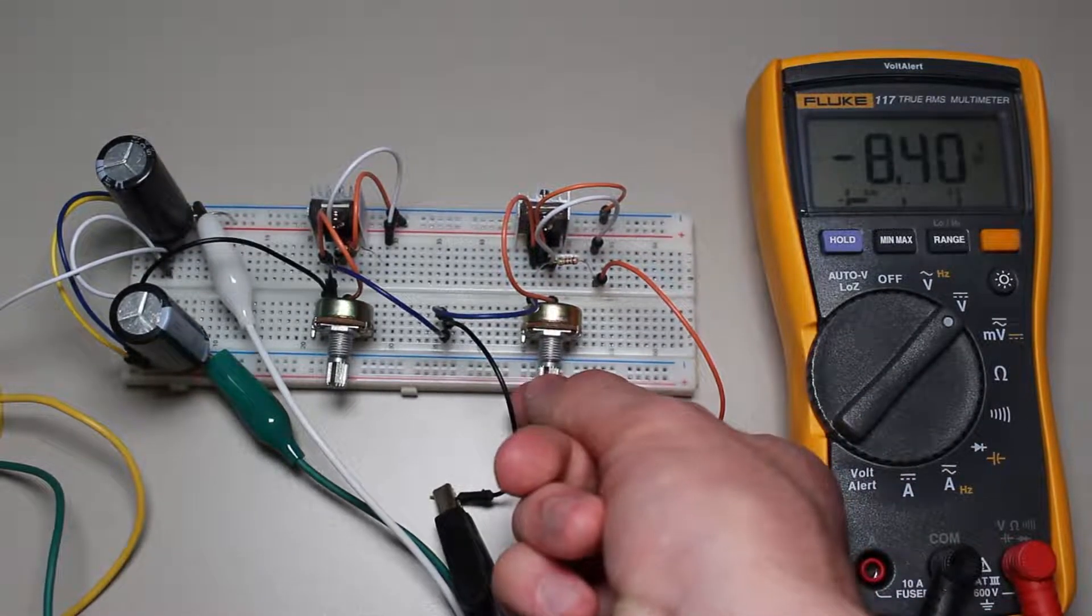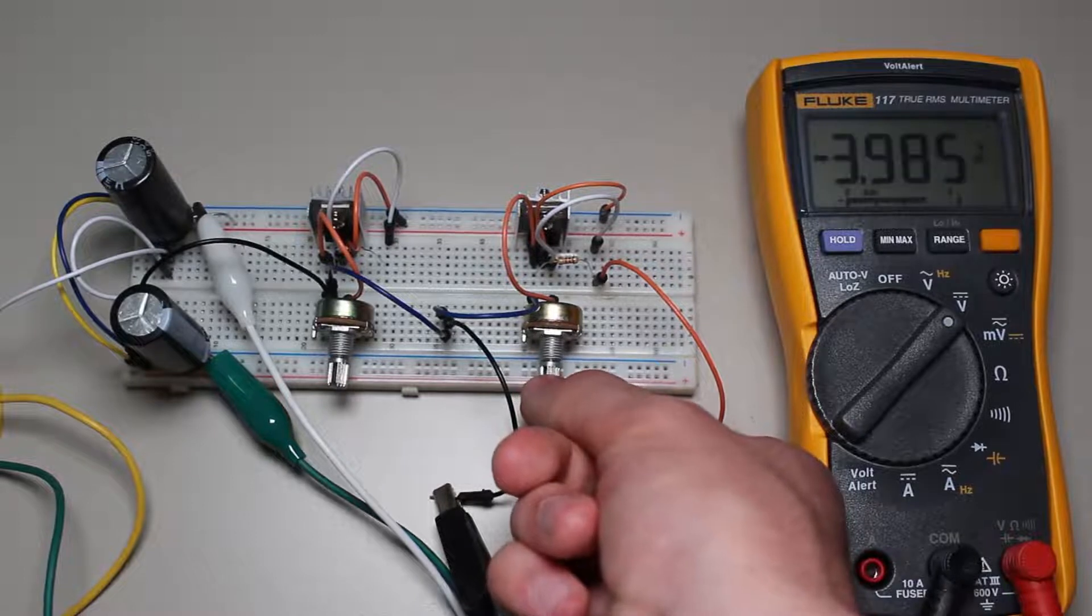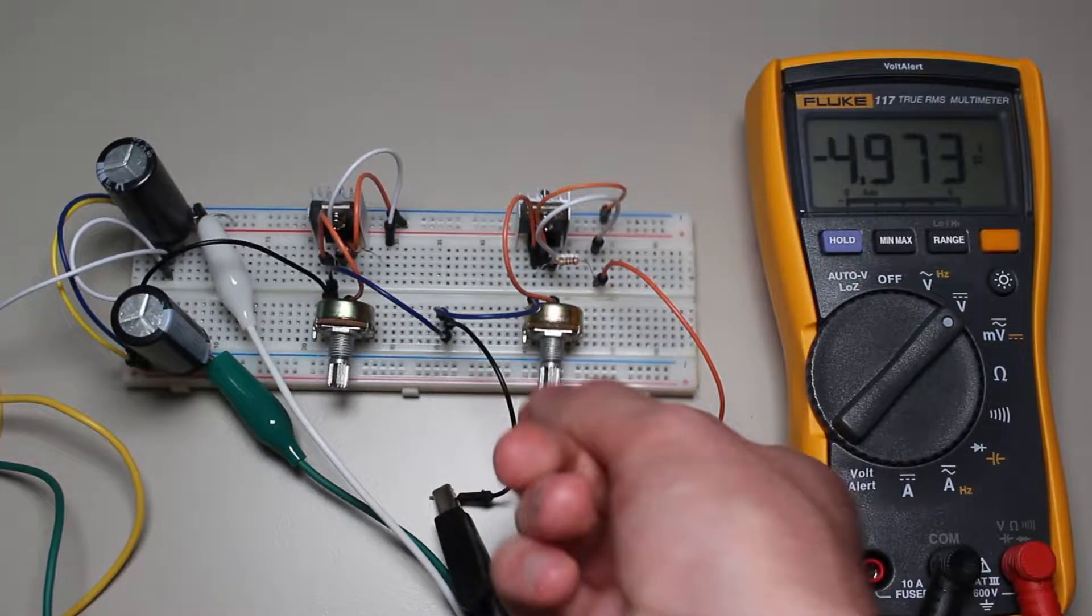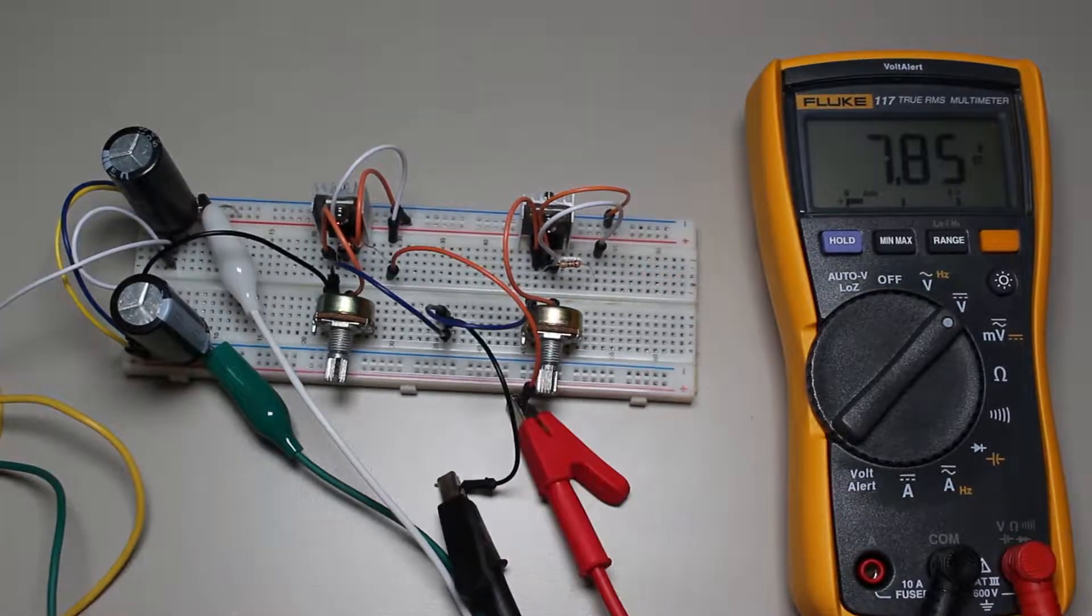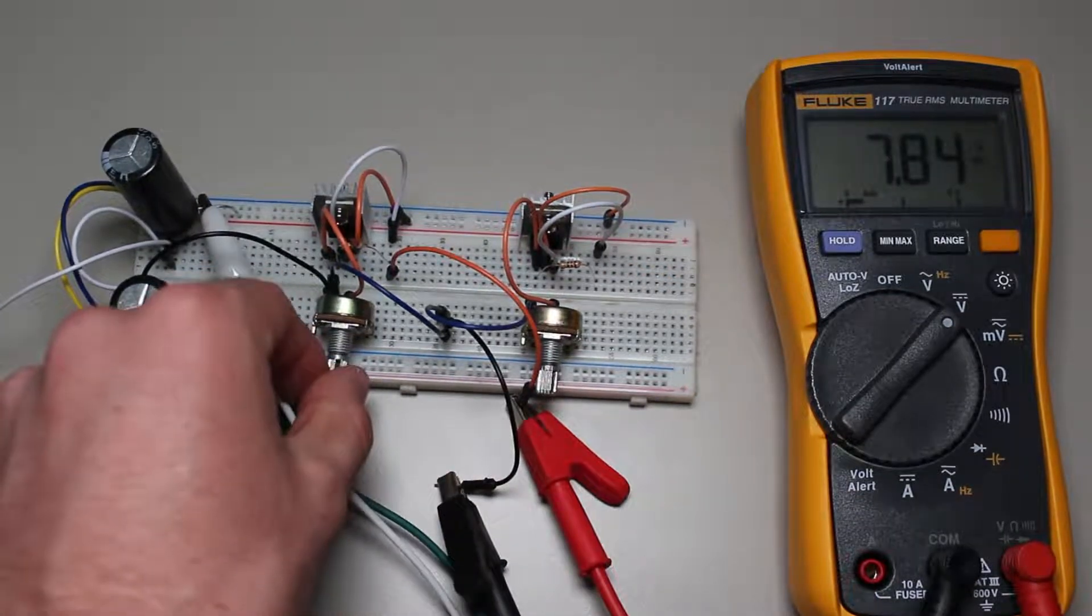Now, while I won't be speaking much more about the LM337 throughout the rest of this video, just keep in mind that it can do just about the same things as the LM317, just in the negative voltage range instead.